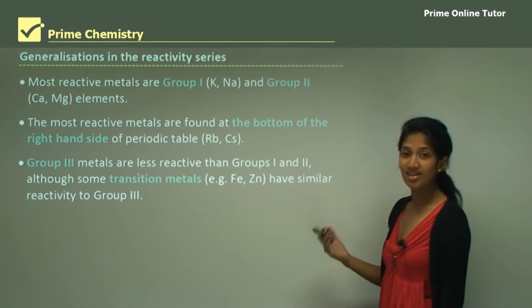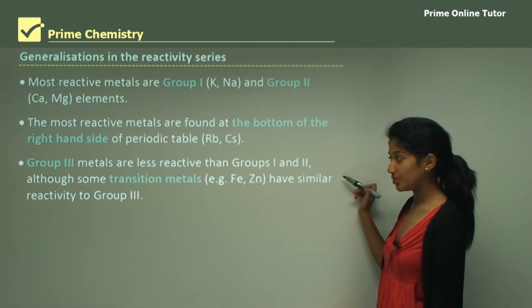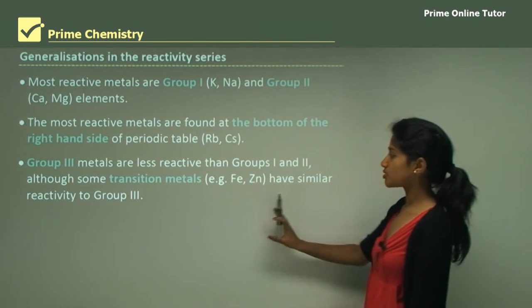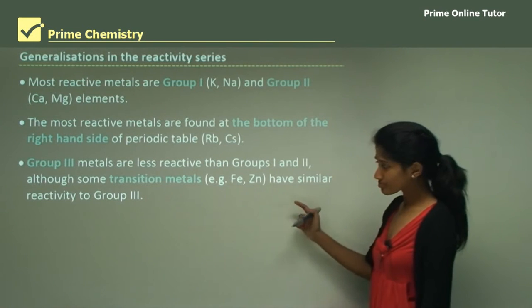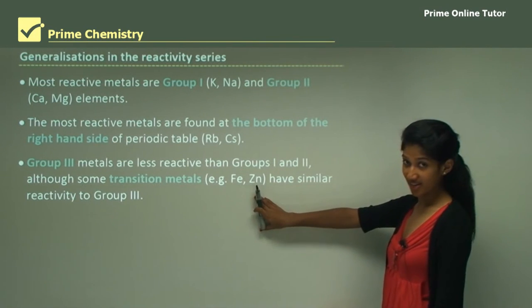Group 3 metals are less reactive than group 1 and 2, although some transition metals have similar reactivity to group 3 elements. These are like iron and zinc here.